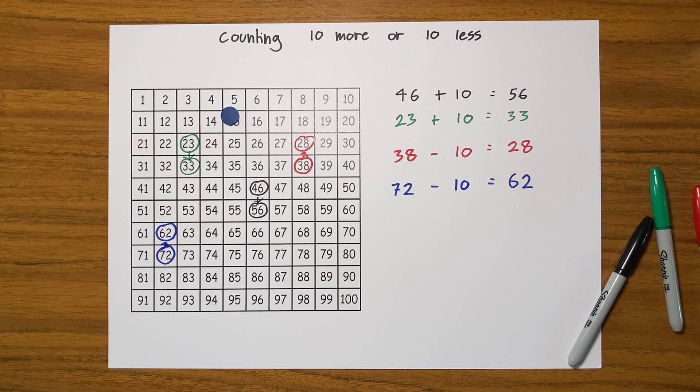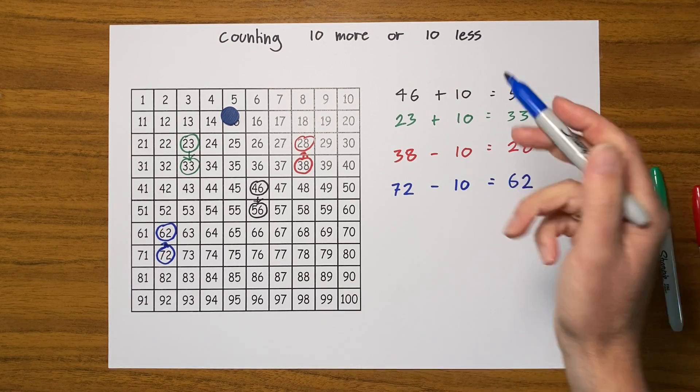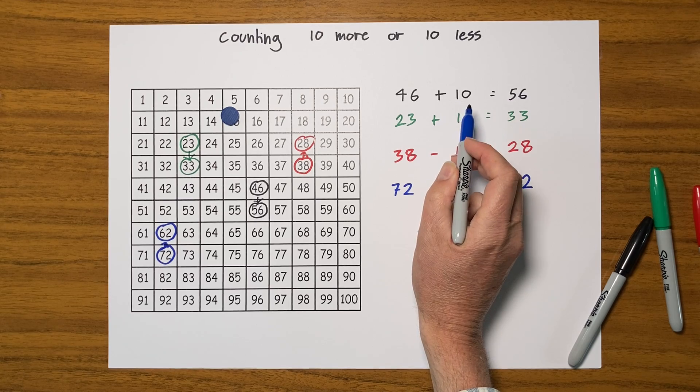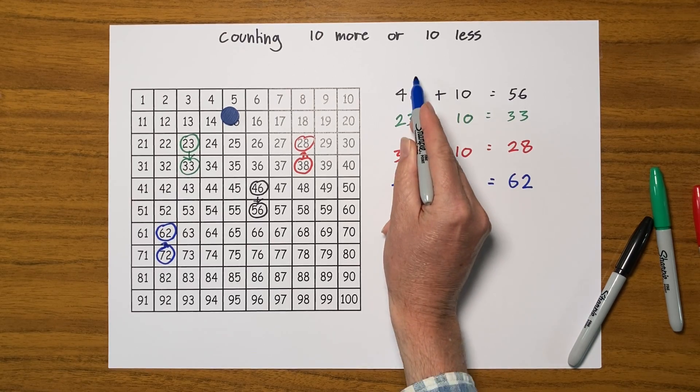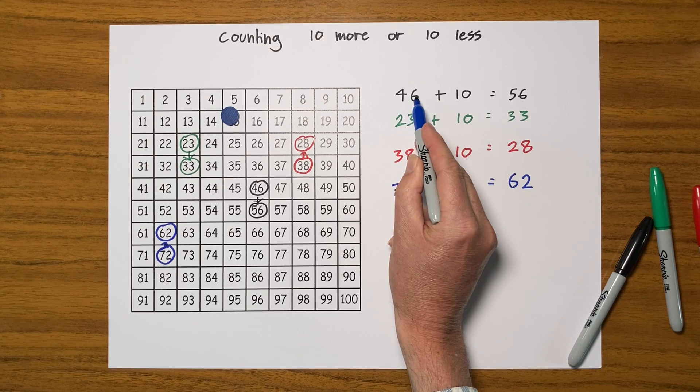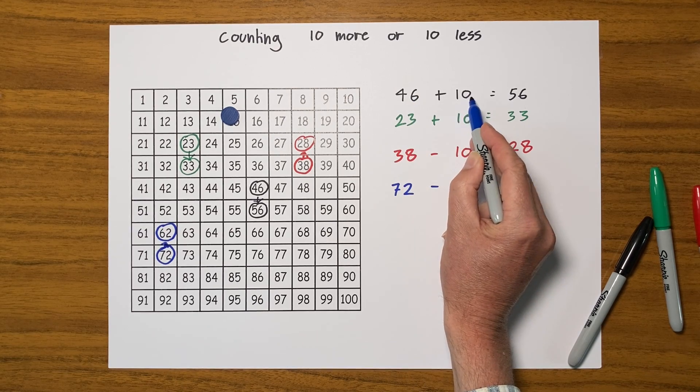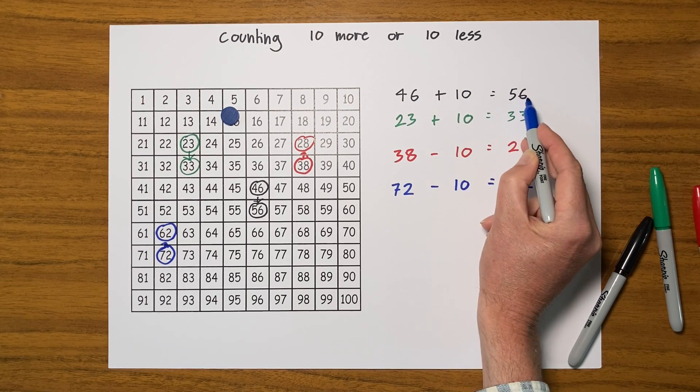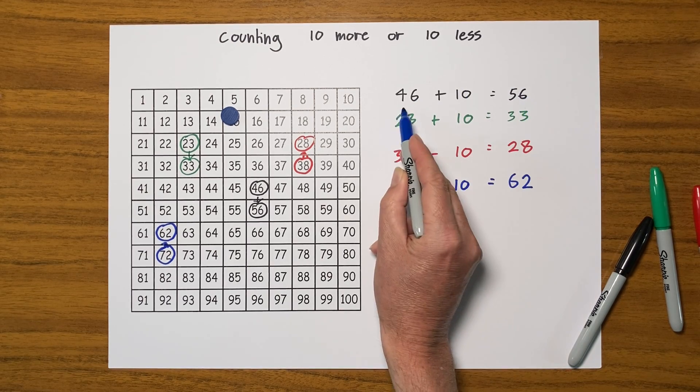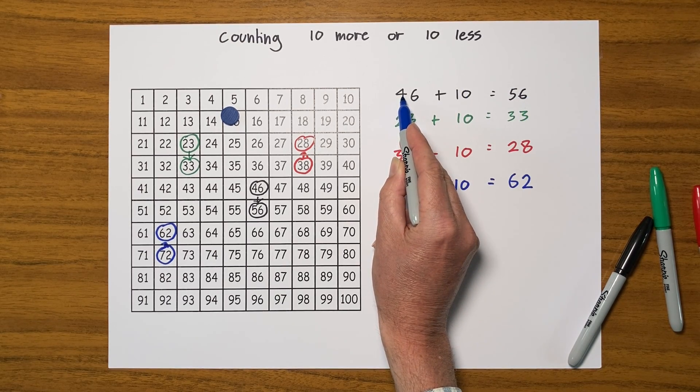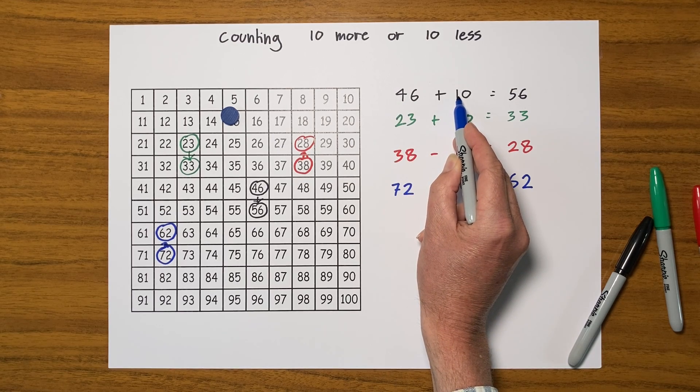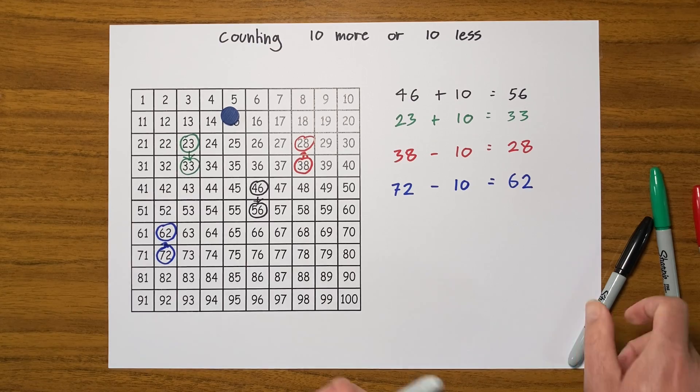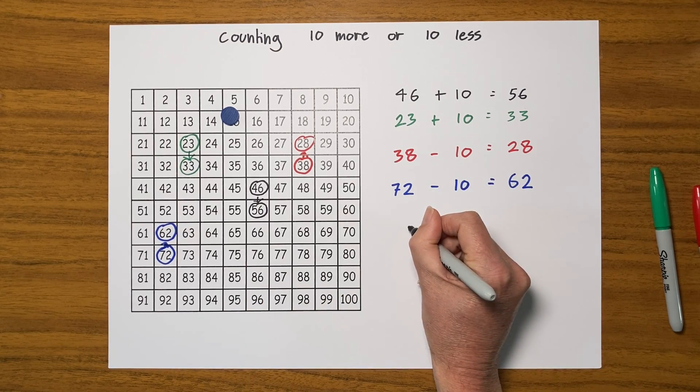Now if I go back and have a quick look at this, it's quite interesting to look at the numbers. Because here I've got 46 add 10. Now what I'm doing here is this column here's the units column, so I had six units but I'm not adding any units here because there's zero units here, so that's why that six stays the same. But here I had four 10s and I'm adding one 10, and so I must have five 10s.